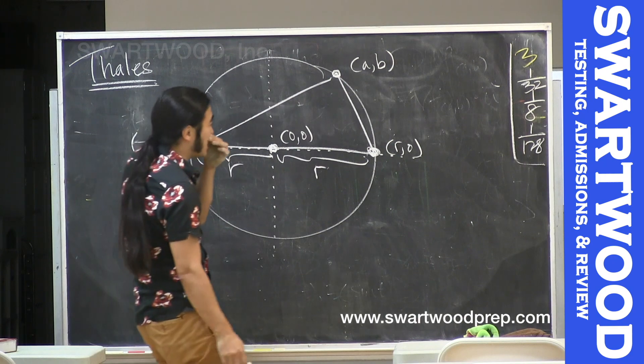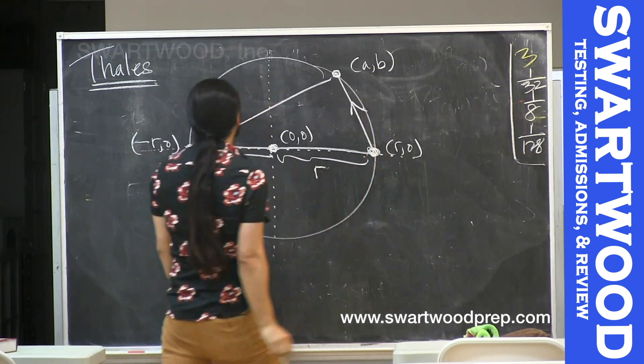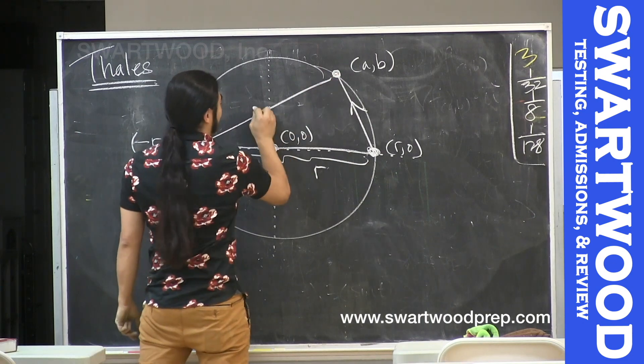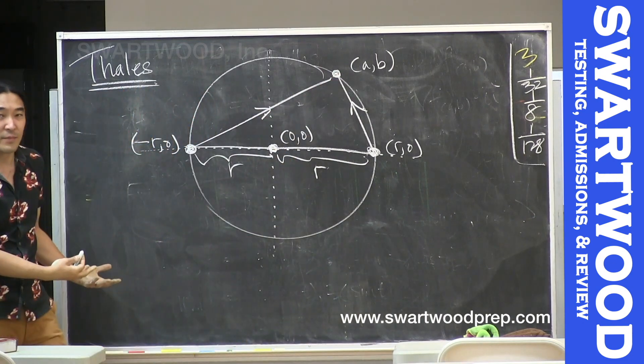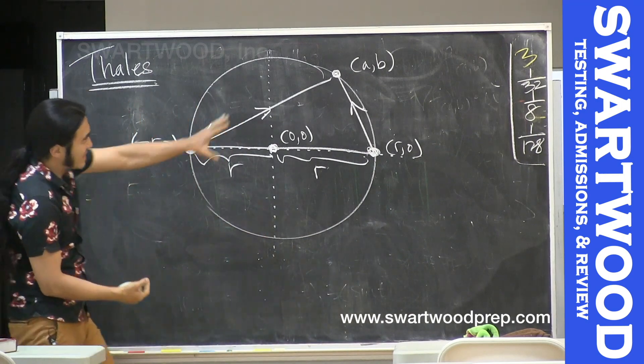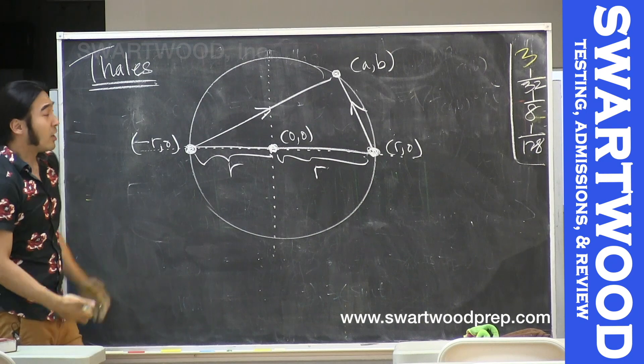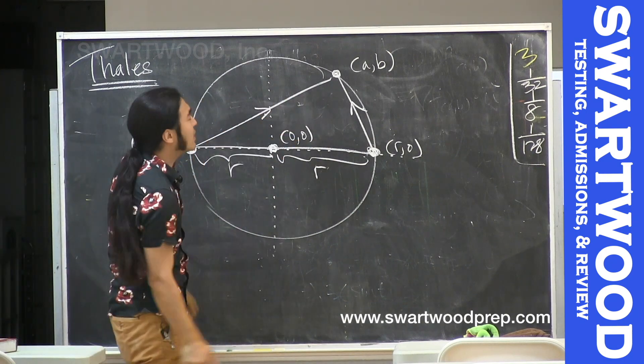We're almost done, believe it or not. So what we need to do is make some vectors up. I'm gonna start from here and go to here and make this a vector, and maybe start from here and go to there and make this a vector. You can have the arrows going different directions, it's fine, because when you look for these guys being perpendicular it doesn't matter which direction they're going.